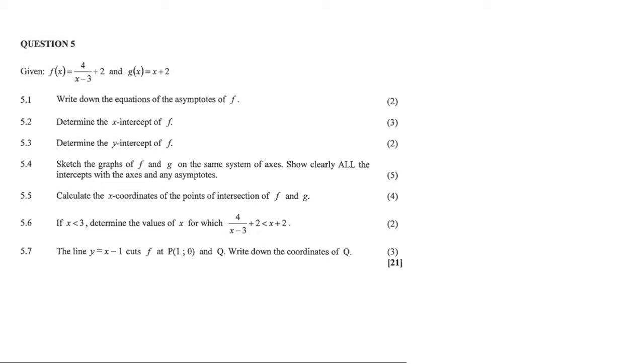Question 5.1 says write down the equation of the asymptotes of f. So f is a hyperbola and we know that a typical hyperbola has vertical asymptotes and horizontal asymptotes. To work out the equation of those, you look at this part and this part. This part tells us that the graph has moved two places upwards. If the graph has moved two places upwards, then it would look something like that and it would be y equals 2. So that is our first answer.